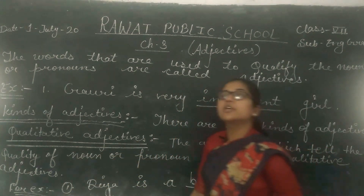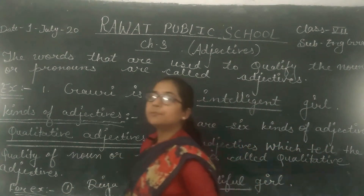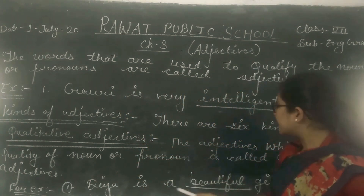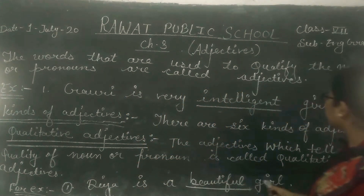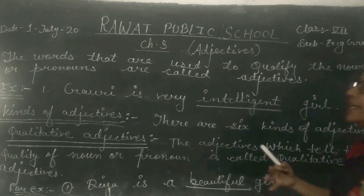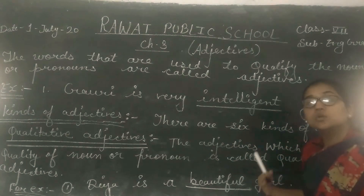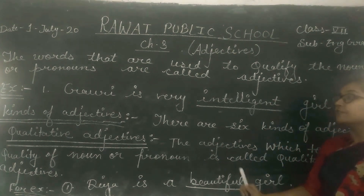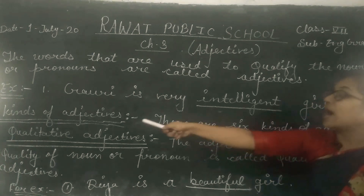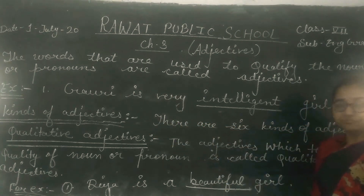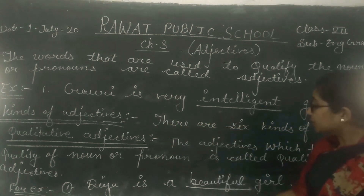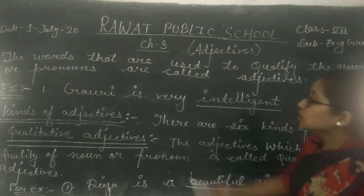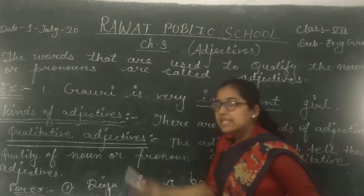I am also giving you one example. First example: 'Dia is a beautiful girl.' So where is the quality? Beautiful. Beautiful is the Qualitative Adjective.